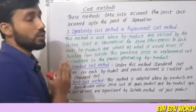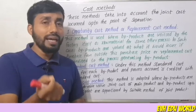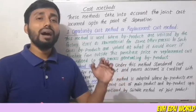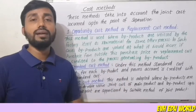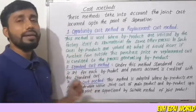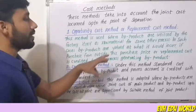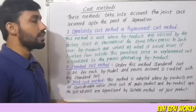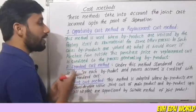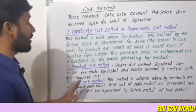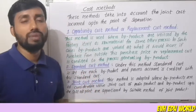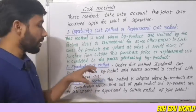The next one is the standard cost method, where a standard cost is set for each byproduct. These standard costs are fixed for all byproducts and credited to the process generating them. The next method is the joint cost method, which is adopted where byproducts are of considerable value.